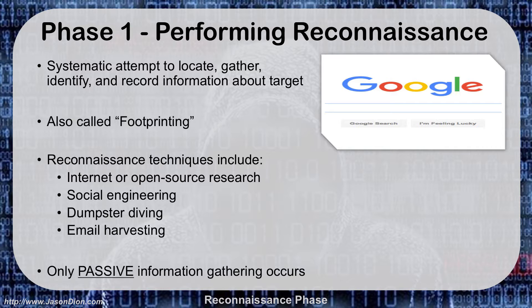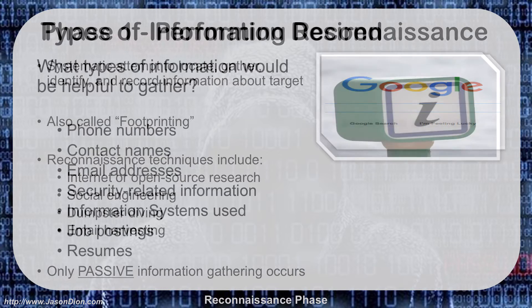This is also known as footprinting, and it is a passive collection technique. We'll do things like using open source research and internet searches like Google. We'll use social engineering, dumpster diving, and email harvesting to collect as much information as we can about the organization before we start targeting it for an actual exploit.